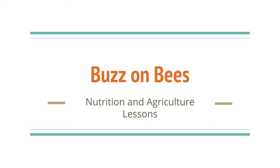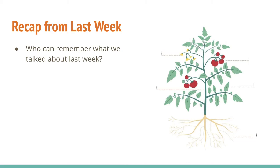Really quickly, to do a recap from last week's lesson, we were talking about the six parts of the plant: our root at the bottom, our stem which goes through the plant, our branches which are also part of the stem, our leaves, the tomatoes which are basically the fruit of the plant coming from the flower which needs to be pollinated — thus our lesson for today — and of course the seeds that are located inside of the fruit.